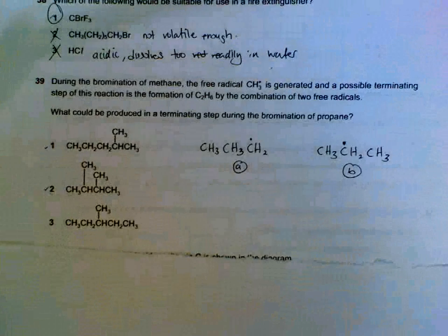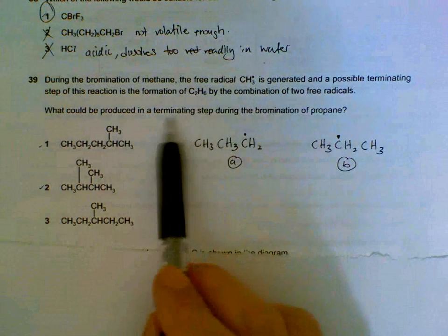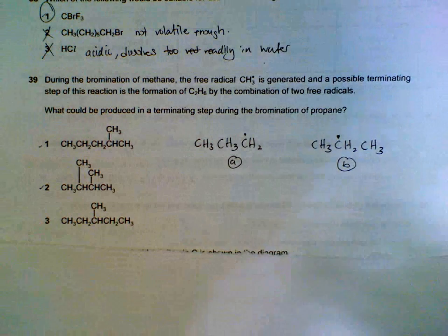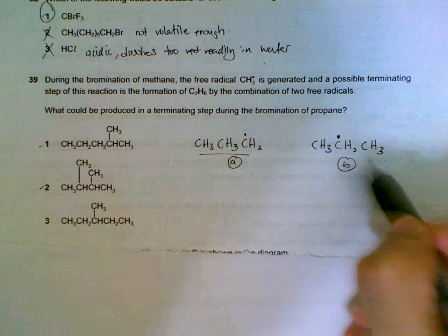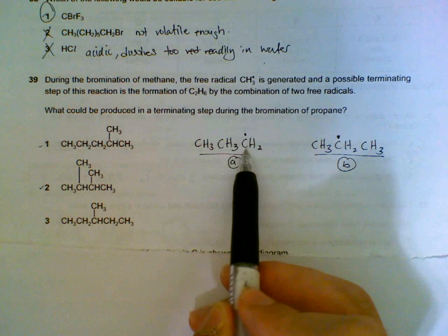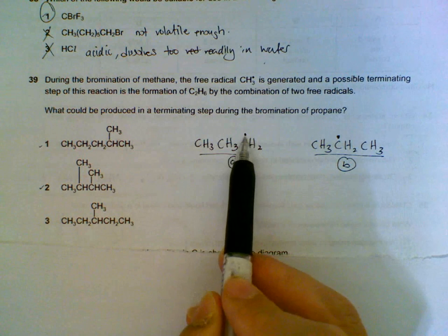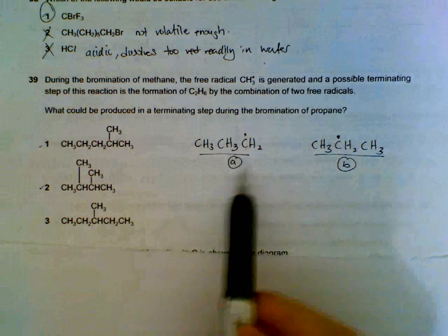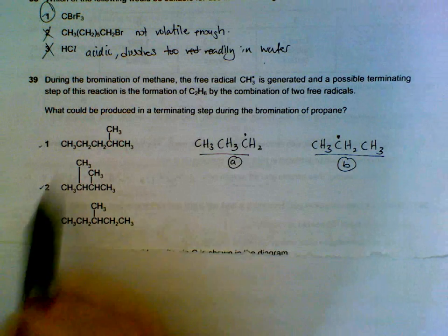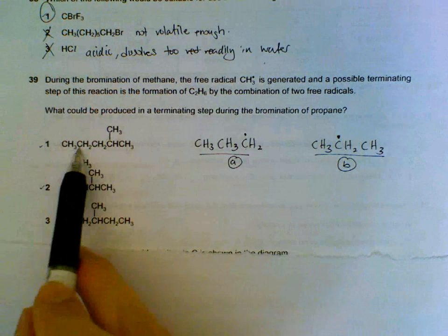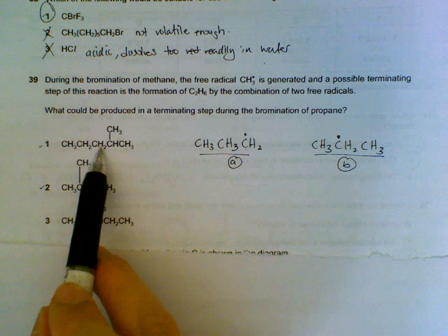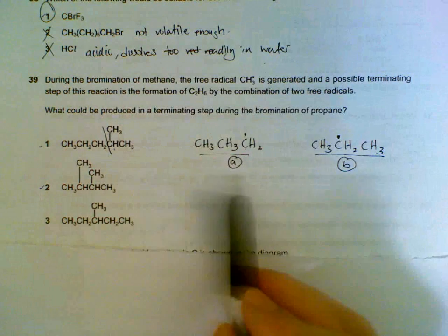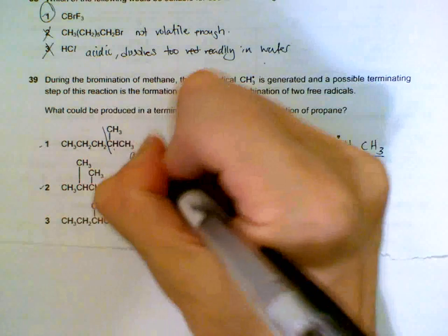Question 39: What can be produced during the terminating step of propane bromination? I'll use propane as the radicals. We can take a hydrogen from the last carbon, so we have the unpaired electron here. We can take the hydrogen from the middle carbon—unpaired electron is here. Label them as A and B. Molecule 1 is formed when the tail end of one radical is joined to the middle of another radical. It's like an A and a B forming, so this is possible.